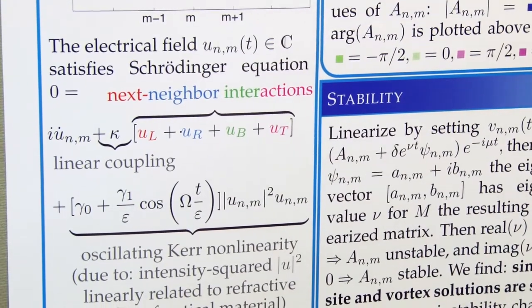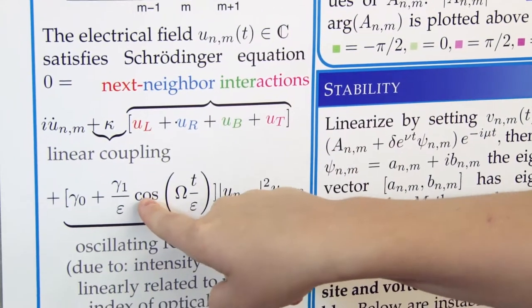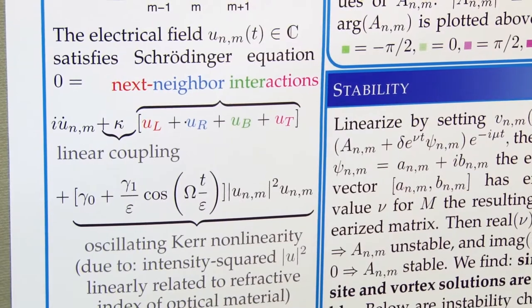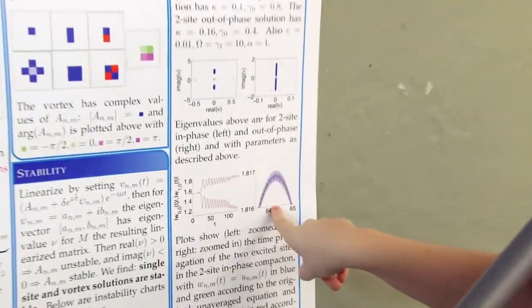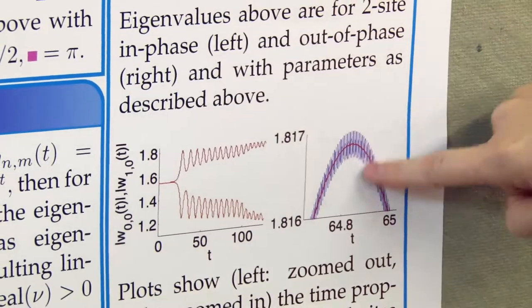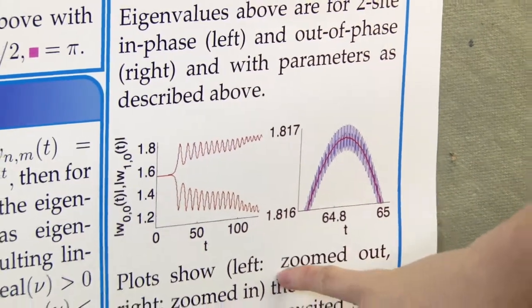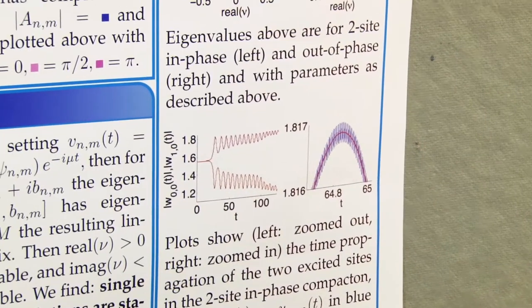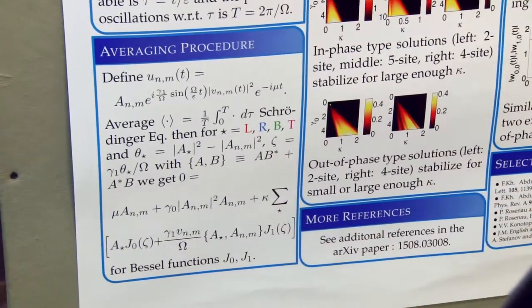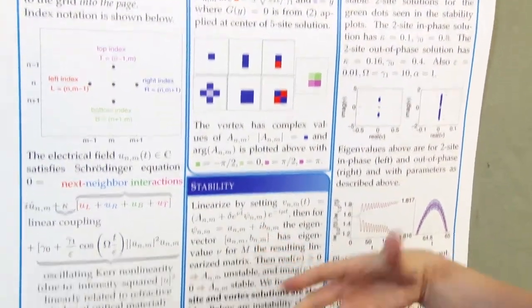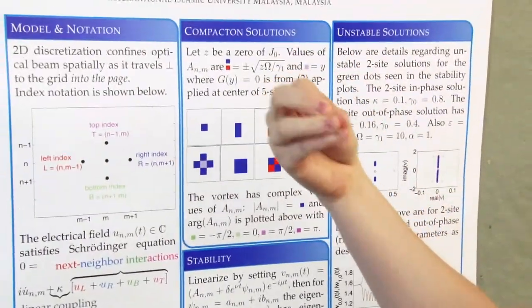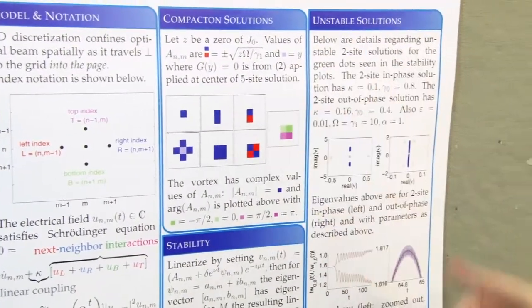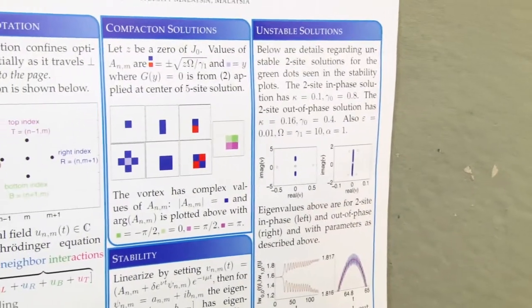We wanted to observe some of these localized structures to see if this oscillation in the time variable would give us the localized structures — that's what the poster is about. What you end up doing is taking this oscillating term and doing an averaging procedure to get just the average of the oscillations. In a picture like this, the unaveraged equation is oscillating, but the average cuts right through it. We find these little localized structures and then ask whether they will be stable over time — does it stay as a single coherent structure or does it dissipate?